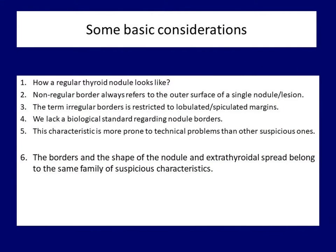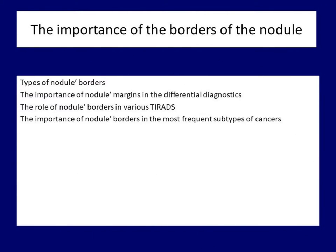As a final consideration, the borders and shape of the nodule together with extrathyroidal extension belong to the same family of suspicious characteristics. Each of them refers to the infiltrative growth of a cancer. After the introductory considerations, we move on to the next section. We discuss the different types of margins and will focus on their importance in differential diagnostics, their role in various thyroid systems, and in the most frequent subtypes of thyroid cancers.